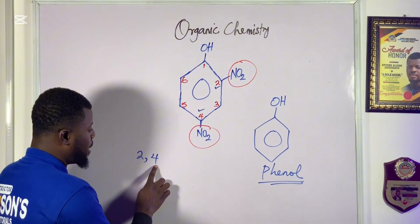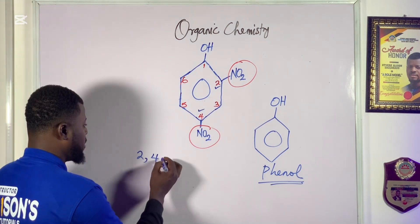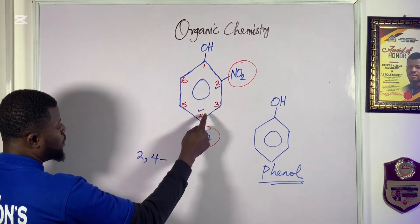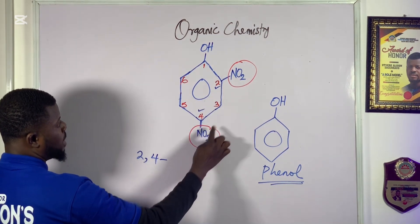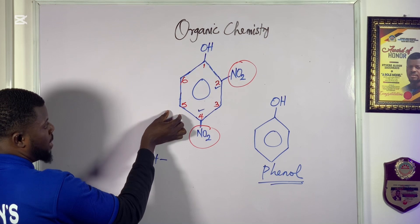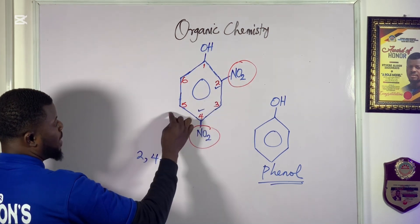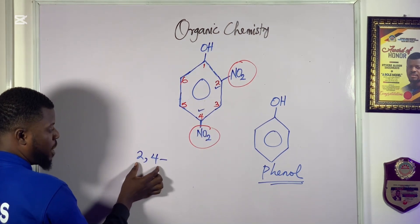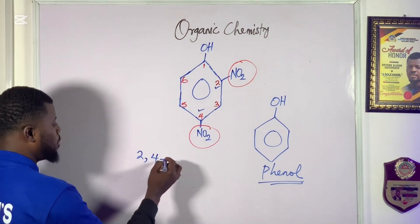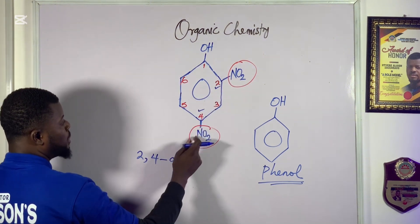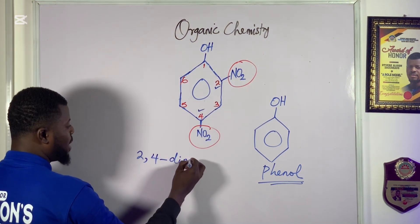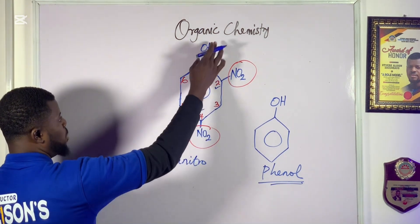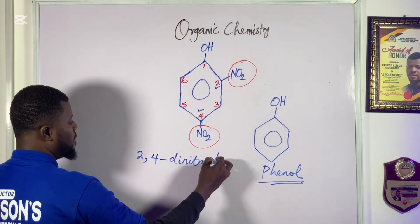Between a number and a letter of the alphabet you use a hyphen — that's very important to note. We have 2,4 because of the positions of the nitro groups. If one were somewhere else we might have 2,5 or 2,3. Since we have two numbers, it becomes 'di' — so di-nitro. And remember the base name we started with is phenol.